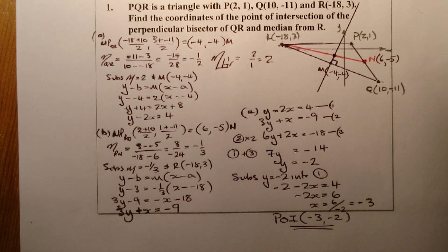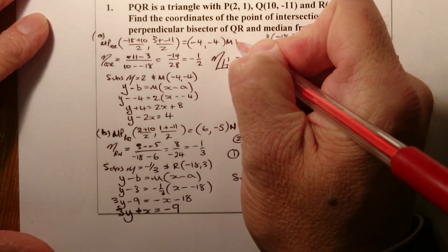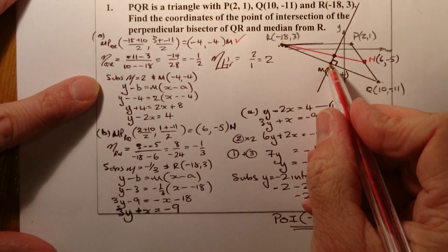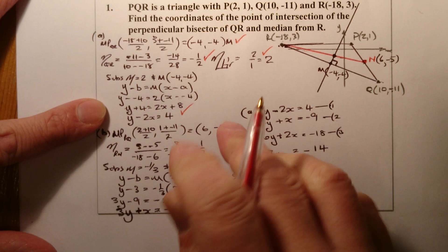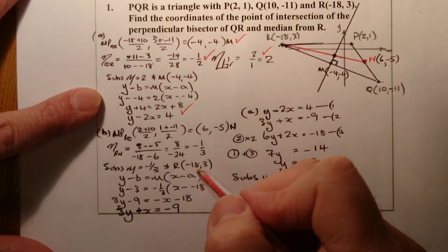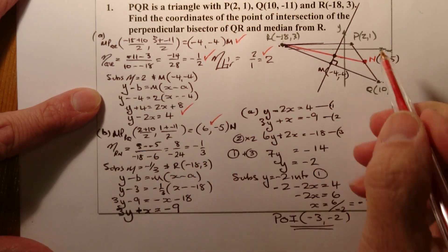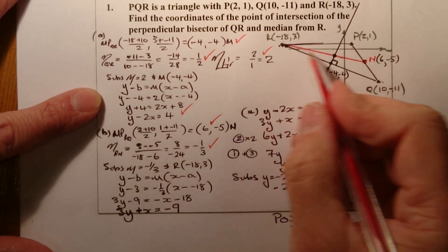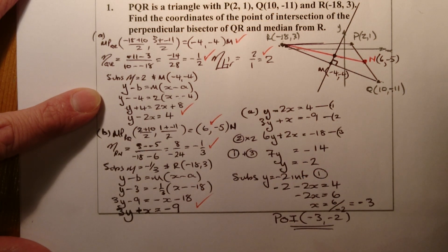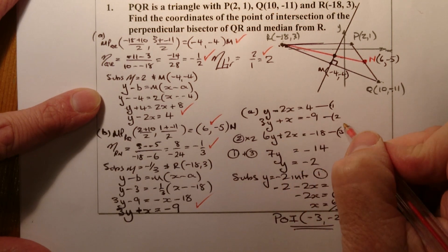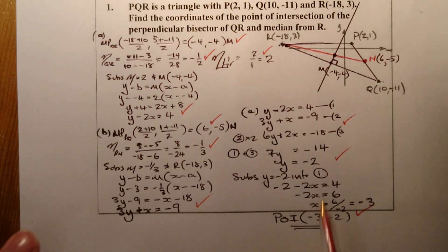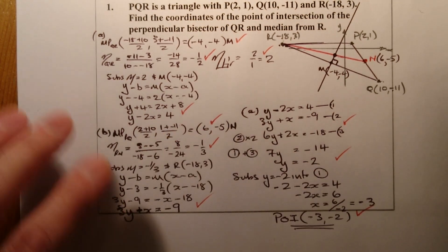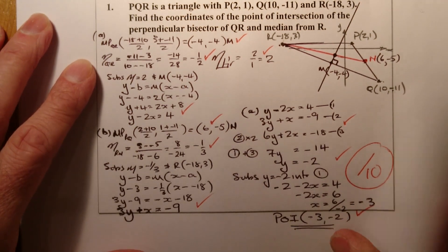For marking: one mark for finding the midpoint of QR, one for the gradient, one for the perpendicular gradient, one for the equation. For the median: one mark for the midpoint of PQ, one for the gradient, one for the equation. Then one mark for scaling the simultaneous equations, one for finding y or x, and one final mark for the coordinates - that's a 10-marker.